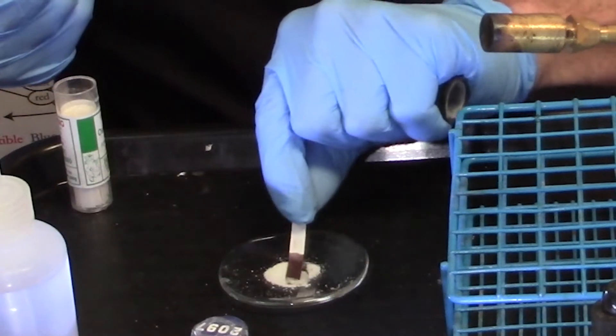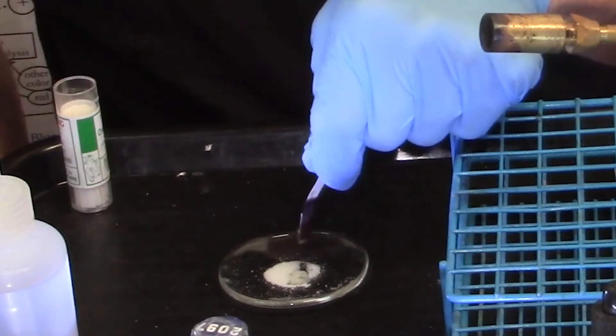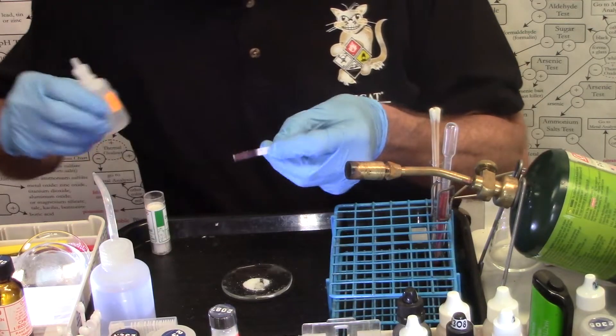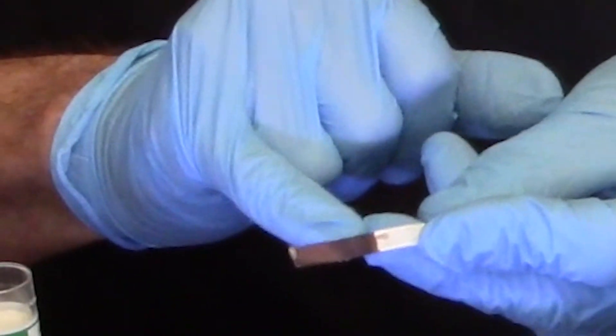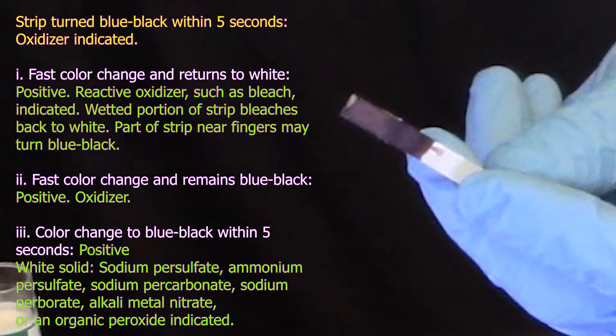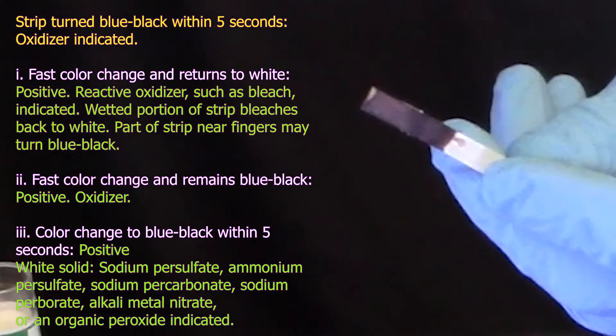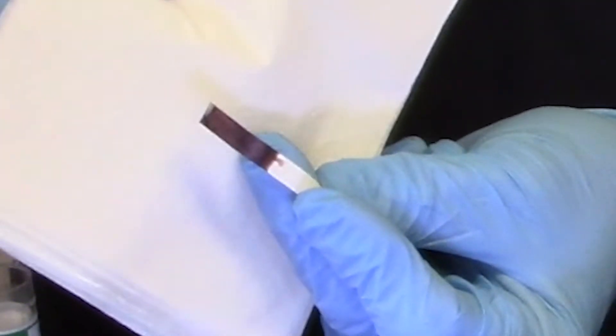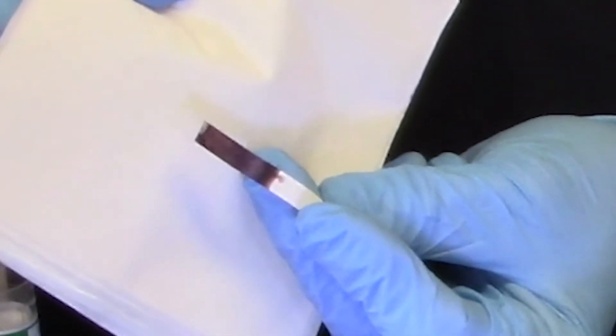One one thousand, two one thousand, three one thousand. Lift, look, and hold it above the watch glass for another two seconds. And we're looking for a deep blue black color, which is what we can see here on the oxidizer test paper. That's positive for an oxidizer if it happens quickly within, say, 15 seconds or so.